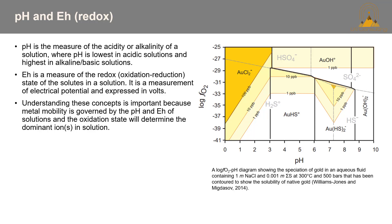Knowledge of redox conditions — equivalently oxygen fugacity — and pH of which rock forms and evolves is important for interpreting the rock's history. pH is a measure of the acidity or alkalinity of a solution. EH is a measure of the redox or oxidation-reduction state of the solutes in a solution, expressed in volts. Metal mobility is governed by the pH and EH of solutions, and the oxidation state will determine the dominant ion or ions in solution.